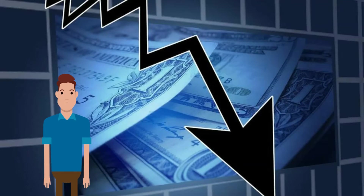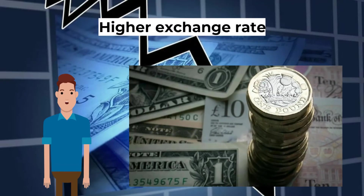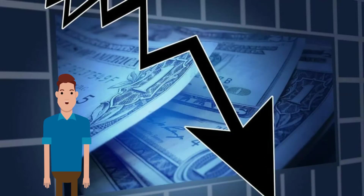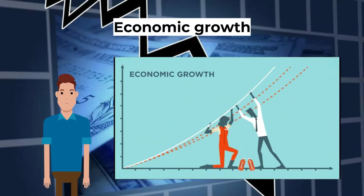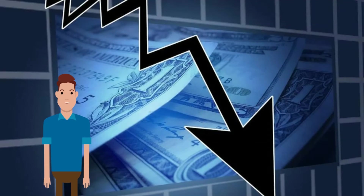What are the causes of a current account deficit? A higher exchange rate: if the currency is overvalued, imports will be cheaper and there will be a higher quantity of imports, while exports become uncompetitive and fall in quantity. Economic growth: if aggregate demand increases and national income rises, people will have more disposable income to consume goods.